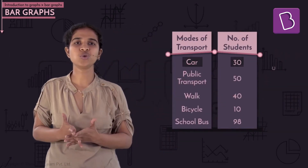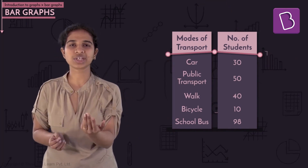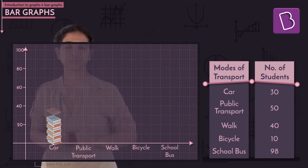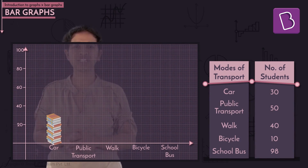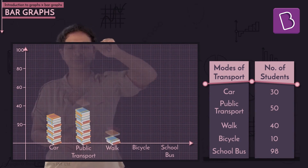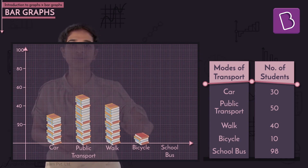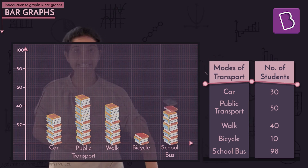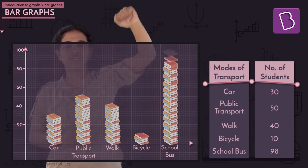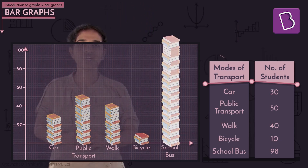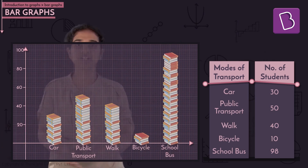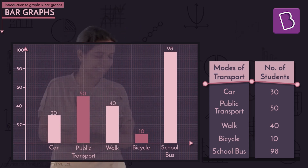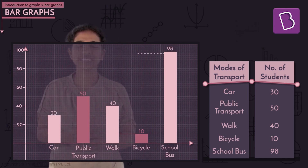Using the same analogy — one student equals one book — 30 students come by car, so that's 30 books. Public transport is used by 50 students, bicycle by only 10. The school bus is the maximum, with 98 students, giving the highest bar. Once all the data is represented on a bar chart, it's very easy to compare quantities, identify the least and the most, and start making sense of the data.